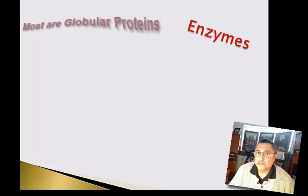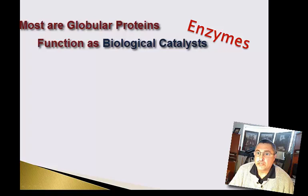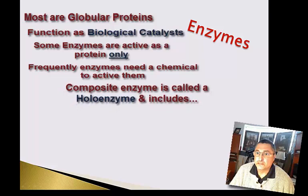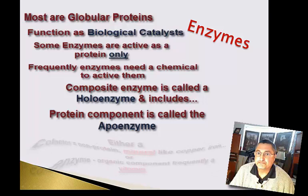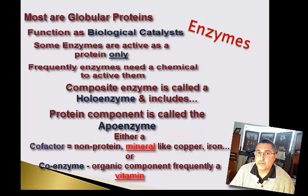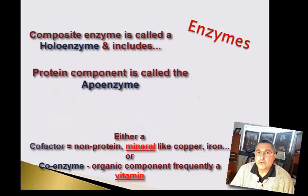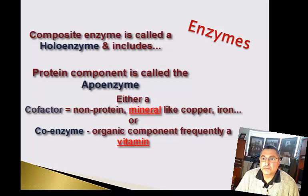One key globular protein to focus on is enzymes. Enzymes are biological catalysts. Enzymes can act as a protein by itself, but frequently they are a composite known as a holoenzyme. A holoenzyme consists of an apoenzyme — the protein component — and either a cofactor, which is a non-protein-based molecule such as the minerals copper and iron, or a coenzyme such as vitamins.